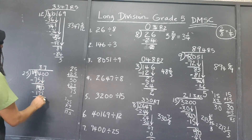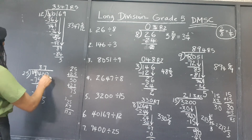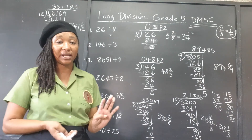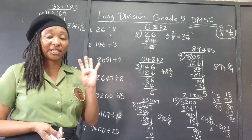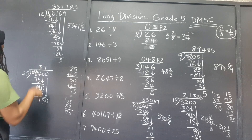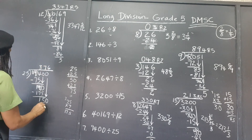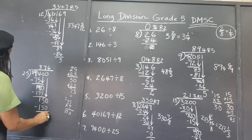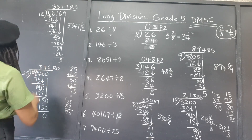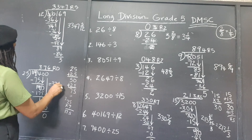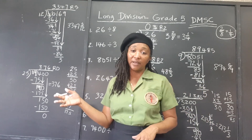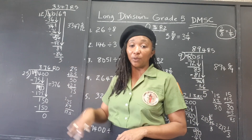Subtract: 190 minus 175 is 15. Bring down the 0 to make 150. How many 25s are in 150? There are 4 in 100 and 2 in 50, so that's 6. Six times 25 is 150. Remainder is 0 — you don't have to write remainder 0. The final answer is just 376. Sometimes when you divide, it goes exactly into the dividend and you get a quotient with no remainder.